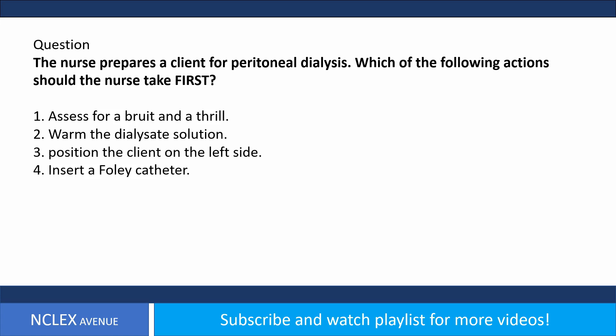Question from Kaplan Q-Bank. The nurse prepares a client for peritoneal dialysis. Which of the following actions should the nurse take first? 1. Assess for a bruit and a thrill. 2. Warm the dialysate solution. 3. Position the client on the left side. 4. Insert a Foley catheter.